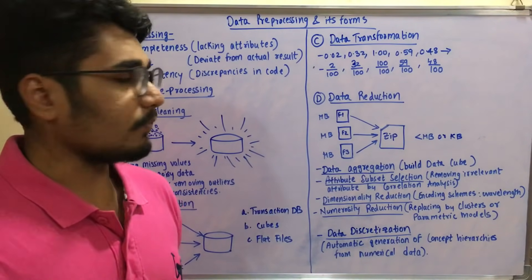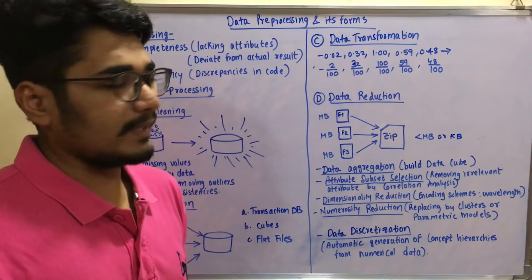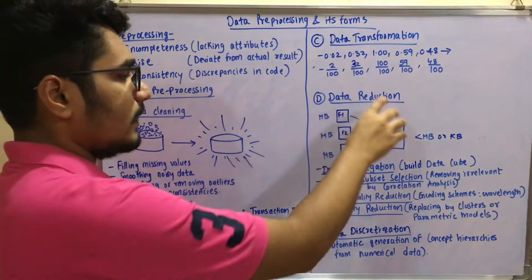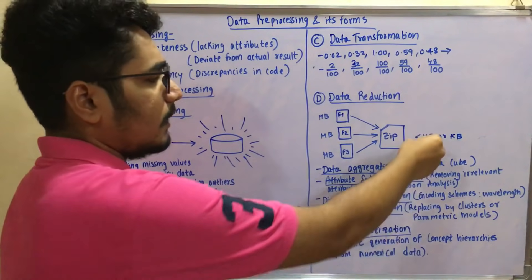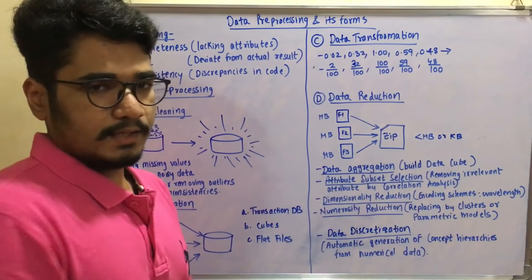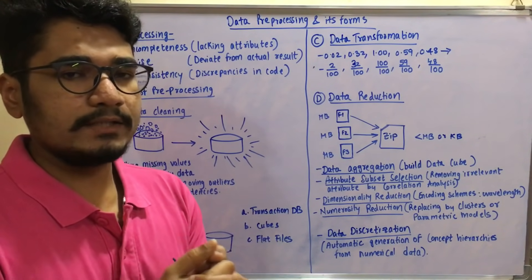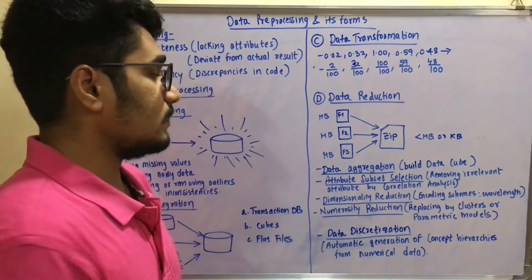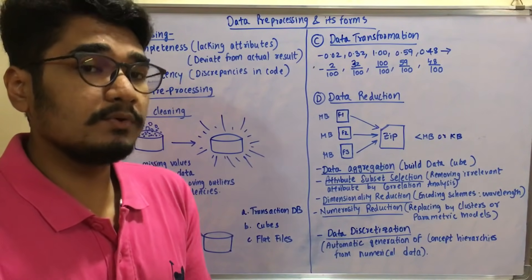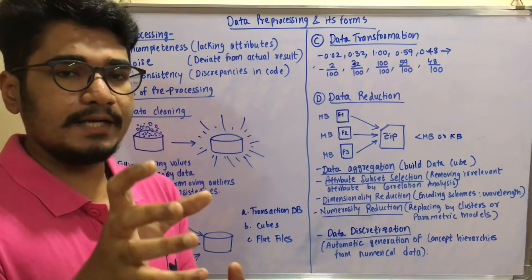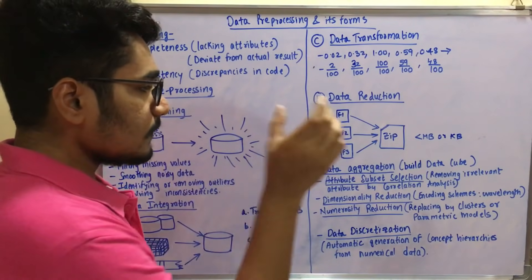Data reduction is the final step in preprocessing. Just as you use a WinZip or 7-Zip extractor to compress files and reduce their size from many megabytes down to fewer megabytes or kilobytes, data reduction reduces data volume while retaining useful information. In data mining, data reduction includes: aggregation, where you build a data cube from all available data; and attribute subset selection, where you select particular attributes from a large superset and remove irrelevant ones using correlation analysis or prediction techniques.